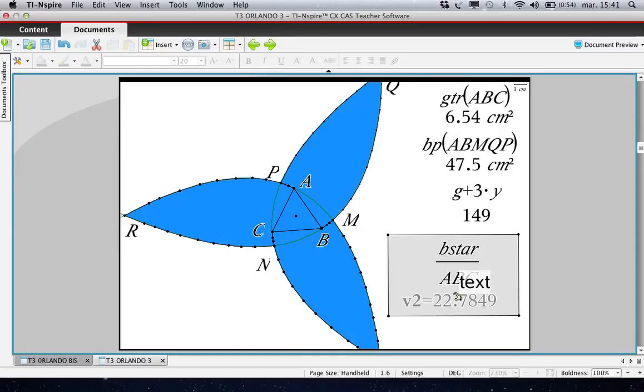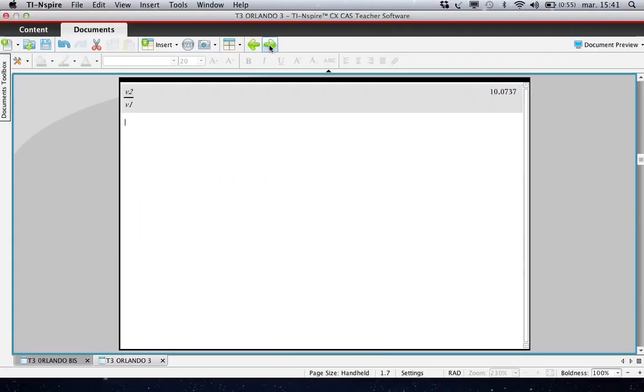If we evaluate the ratio of this ratio, which is the ratio between the area of the blue star and the initial triangle, we get nearly 10. Is it 10? I don't know, it's an open problem.